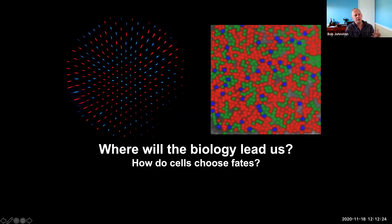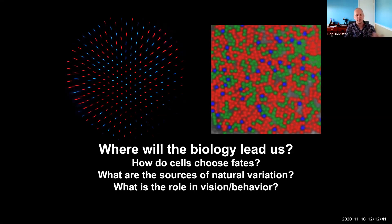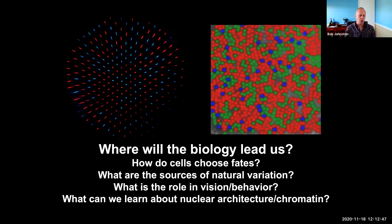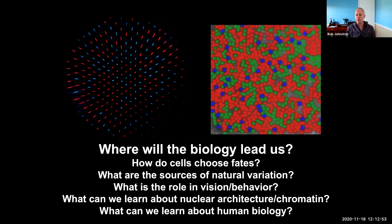To get at this, we've explored sources of natural variation, asked questions about the role of different cell types in vision and behavior, and asked questions about nuclear architecture and chromatin structure. One of the big things we've asked more recently is what can we learn about human biology. Together, asking these smaller questions, it's now moving forward as a lab where we are focused on three very big questions.